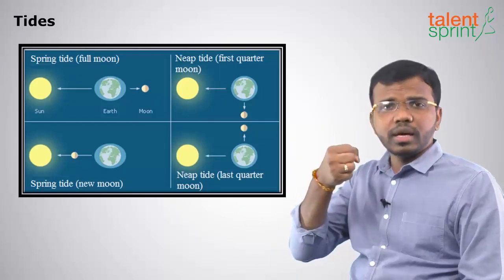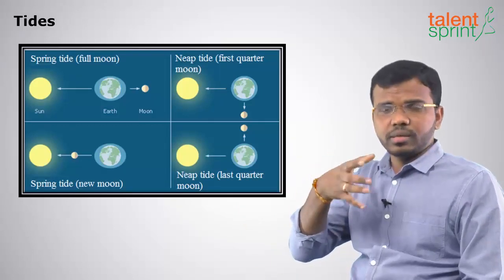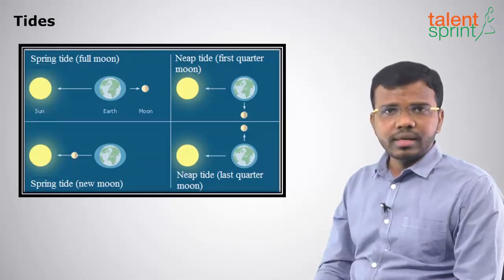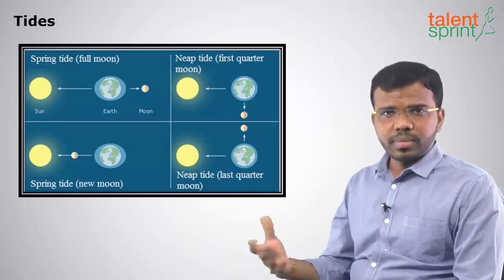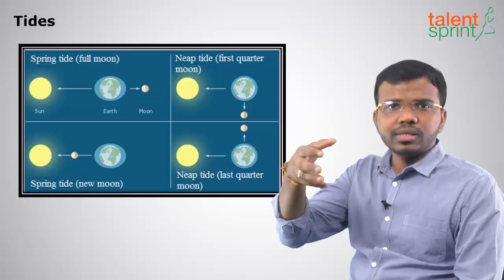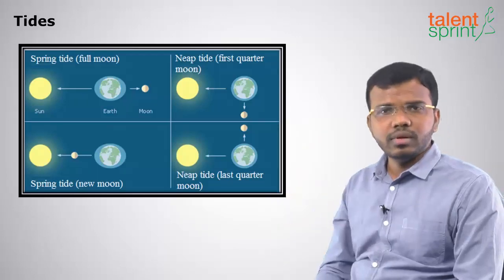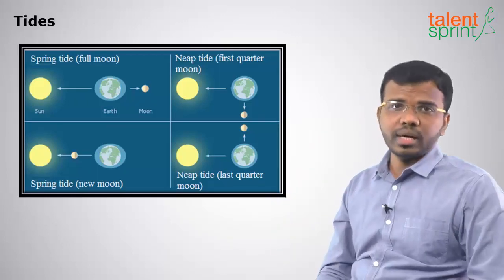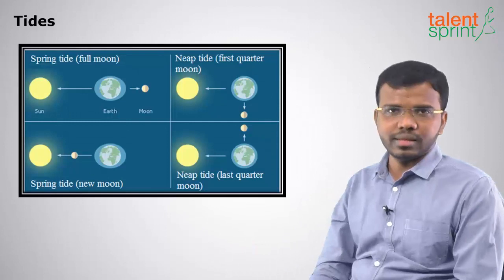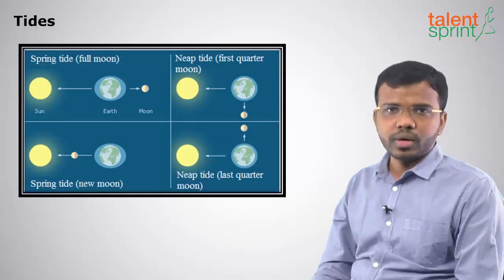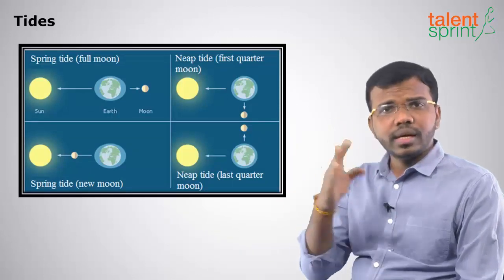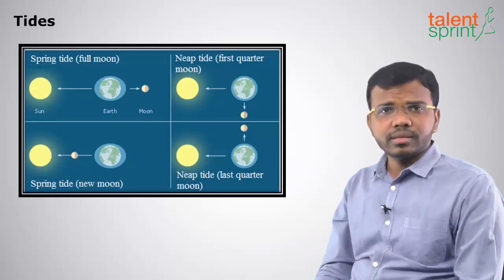Where the moon is pulling, we have high tides — the water level increases at those places. At the other position, we will have low tides because there will be a bulge due to the pull on the other side. So, high tide, low tide, spring tides and neap tides — understood.